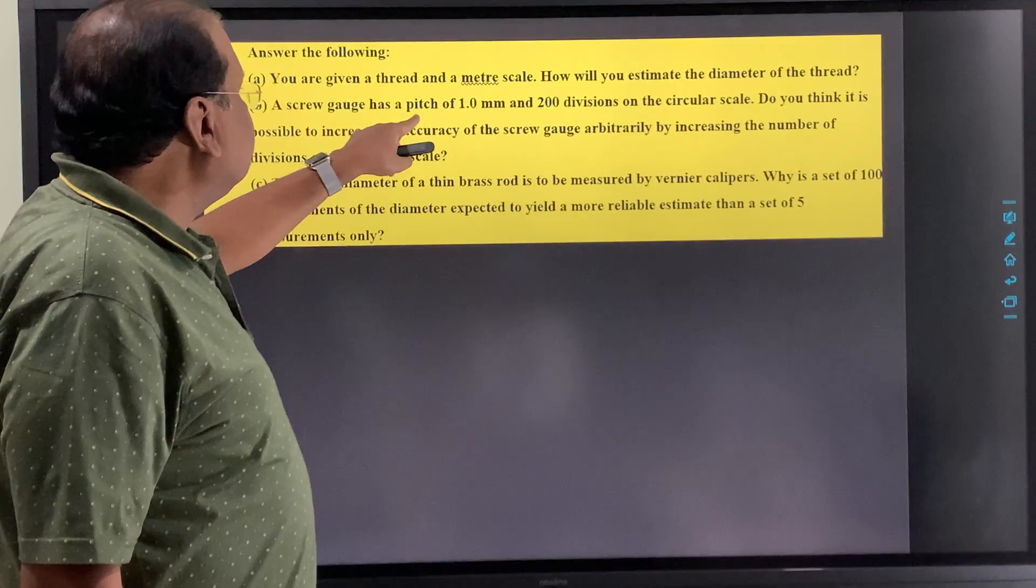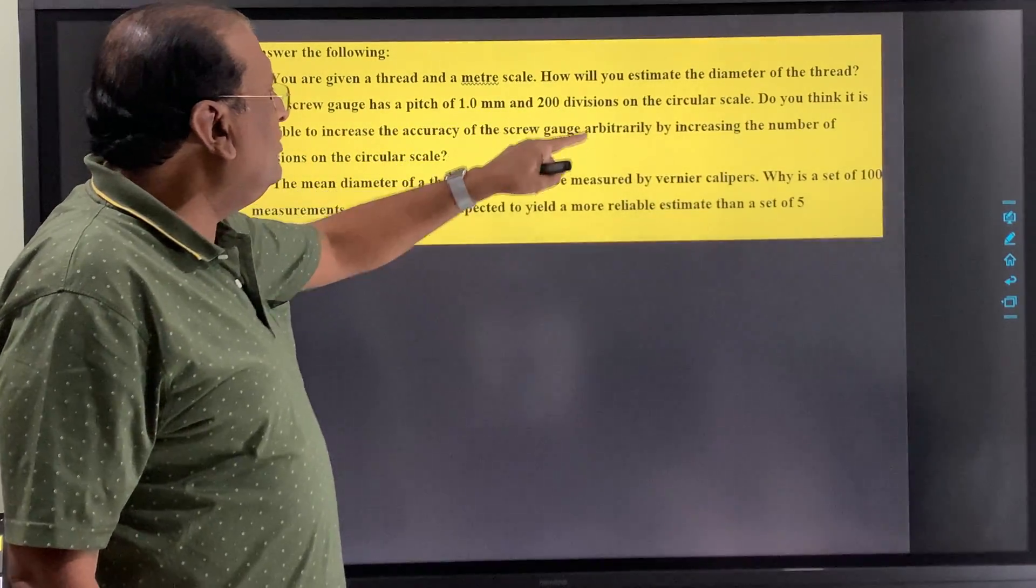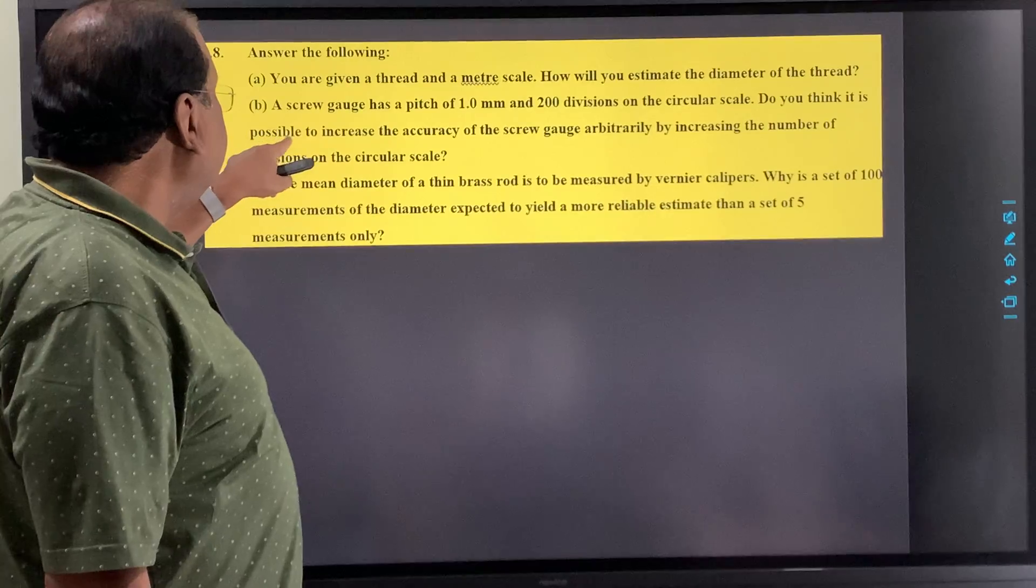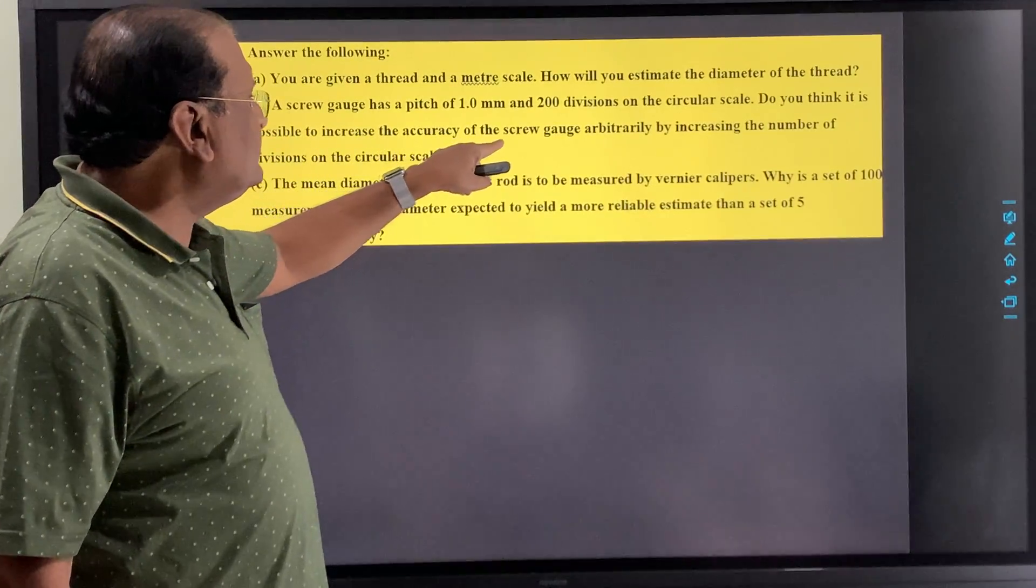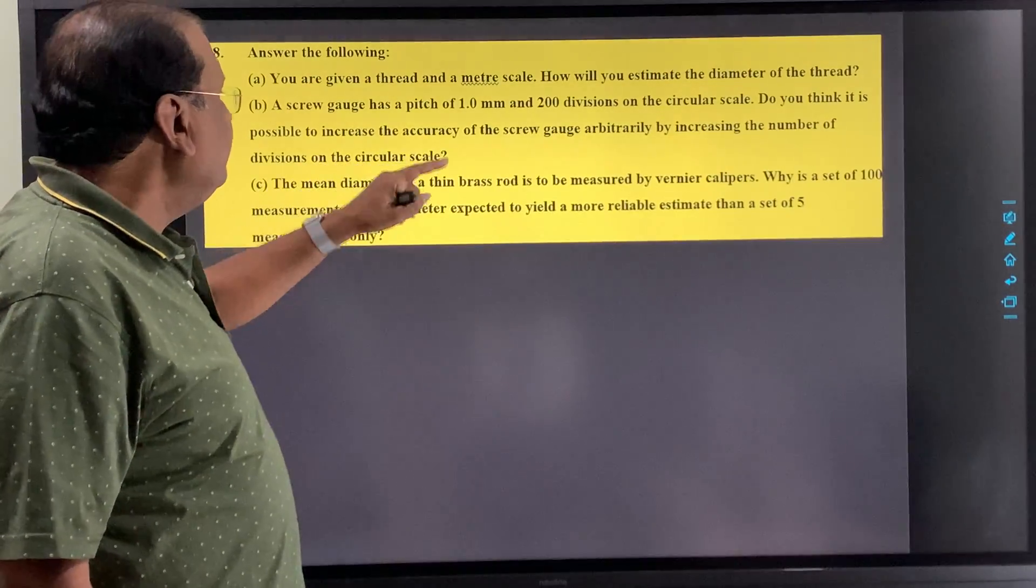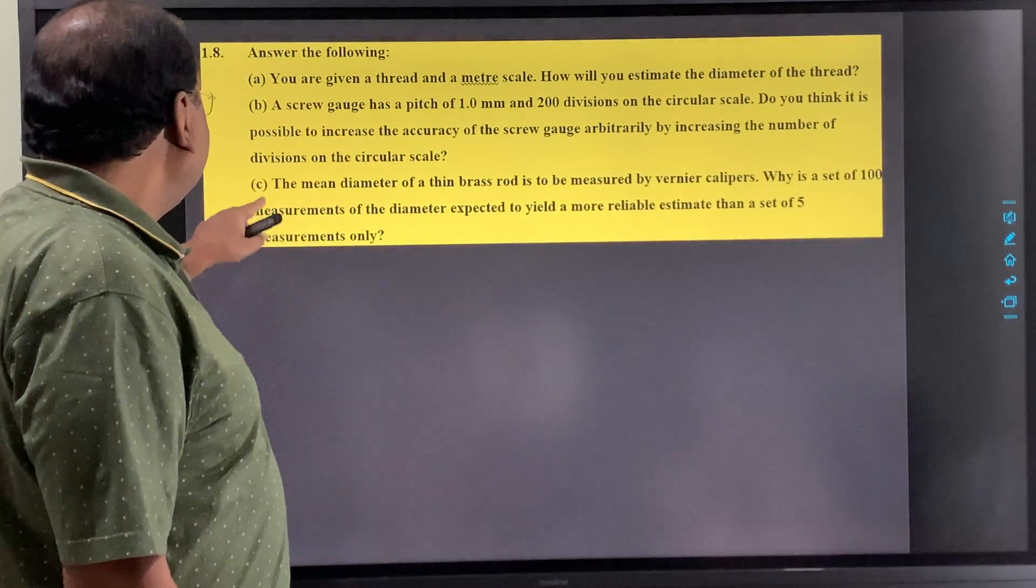B. A screw gauge has a pitch of 1 mm and 200 divisions on the circular scale. Do you think it is possible to increase the accuracy of the screw gauge arbitrarily by increasing the number of divisions on the circular scale?